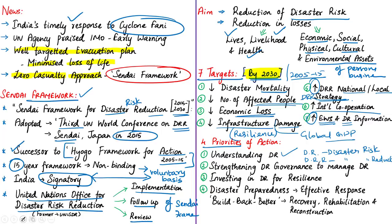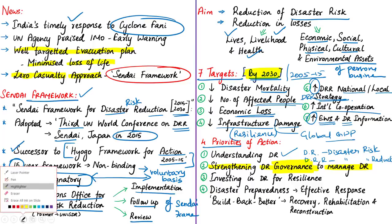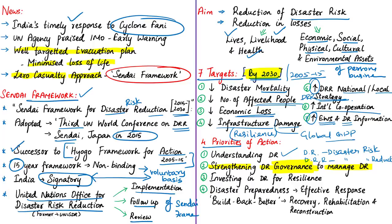Priority two is strengthening disaster risk governance to manage disaster risk. This priority focuses on disaster risk governance at the national, regional and global levels, which is very important for prevention, mitigation, preparedness, response, recovery, and rehabilitation after a disaster. It also fosters collaboration and partnership.